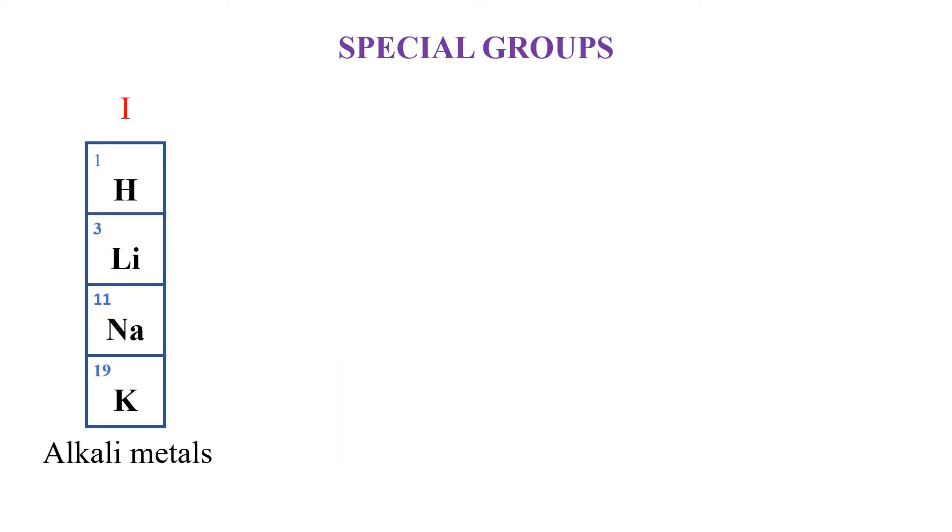In the periodic table, some of the groups are given special names. When we look at group 1, we have the alkali metals. These metals are highly reactive to the extent that they are stored under oil, for example sodium.